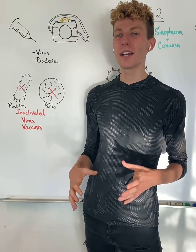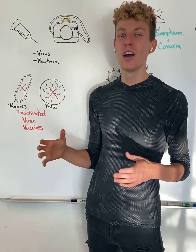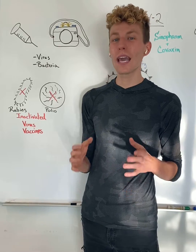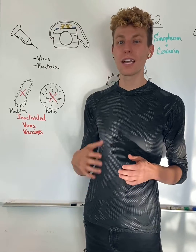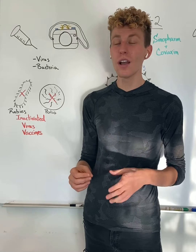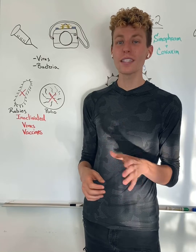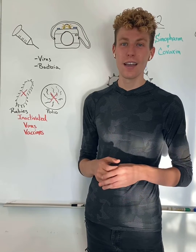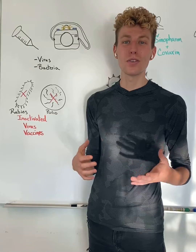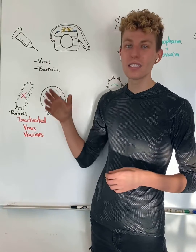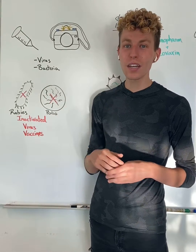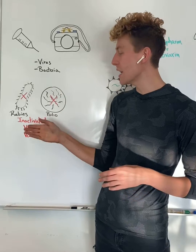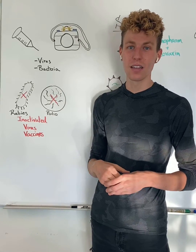Vaccines work by giving our bodies a snapshot of what a particular pathogen looks like, so that in case they come in contact with that same pathogen in the future, they can neutralize and destroy it before it has a chance to make us sick. This has been used in the past against different viruses and bacteria, and one of the technologies used in vaccines is inactivated virus vaccines.